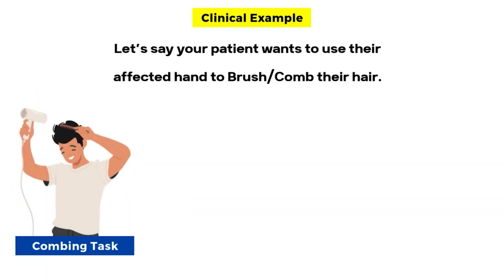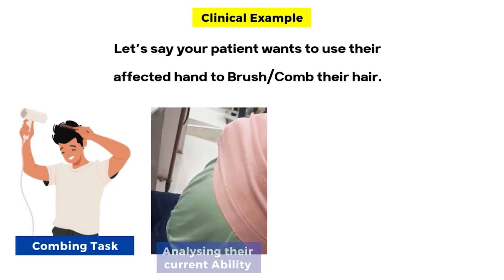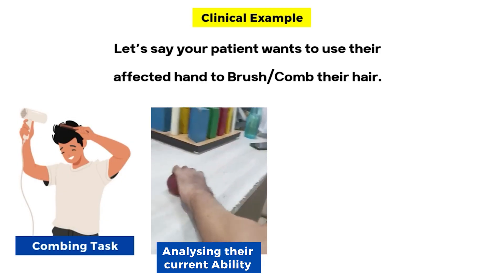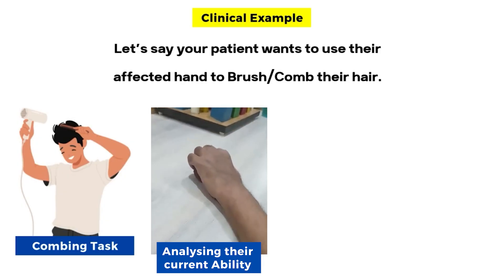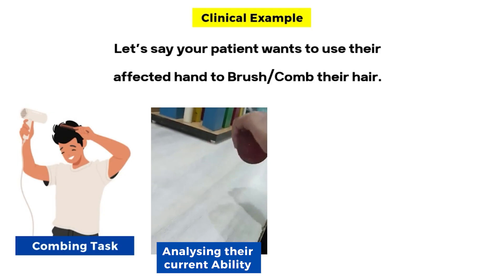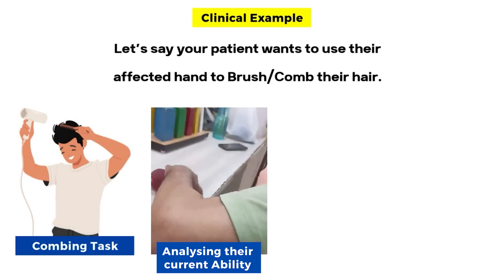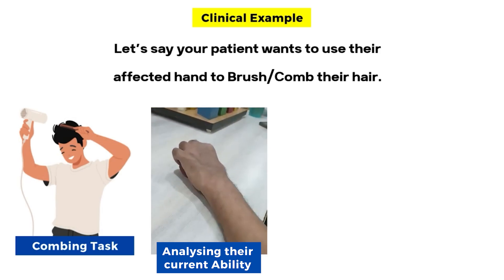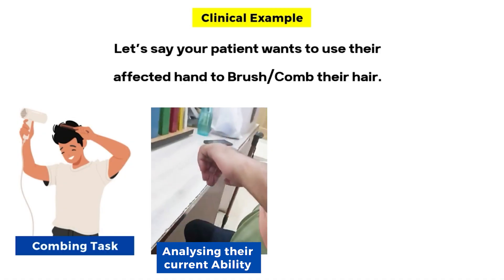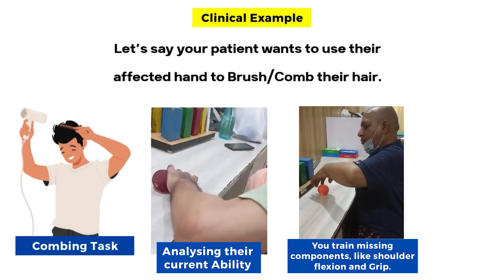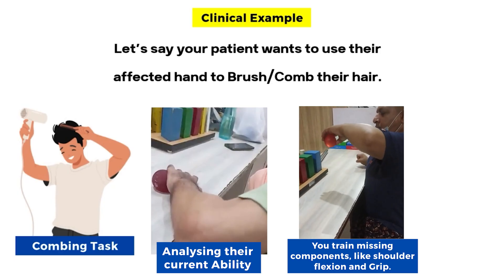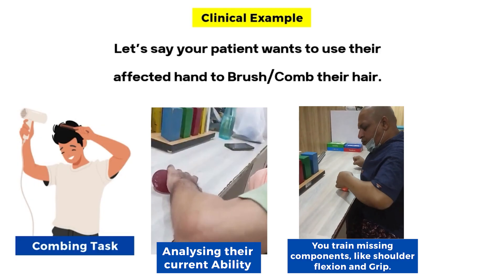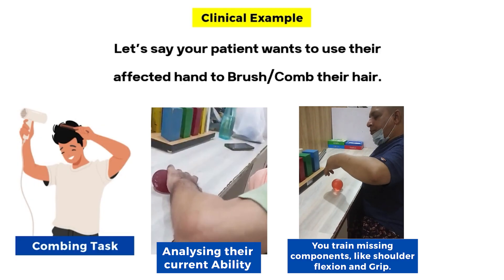Let's say your patient wants to use their affected hand to comb their hair. With MRP, you start by analyzing their current ability — can they lift their arm, can they grasp? You train the missing components like shoulder flexion and grip. The strength and range of motion increases with time. Tone might also increase, and synergy might develop. But remember, purposeful training outcomes will be far better than traditional ones.